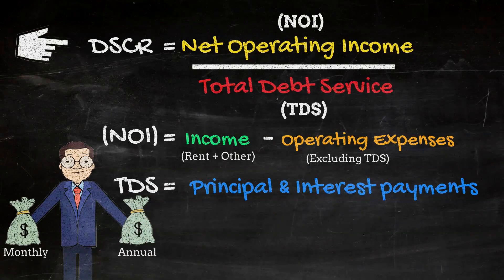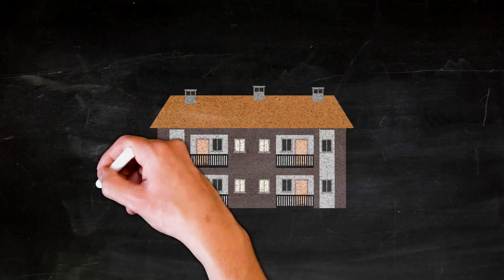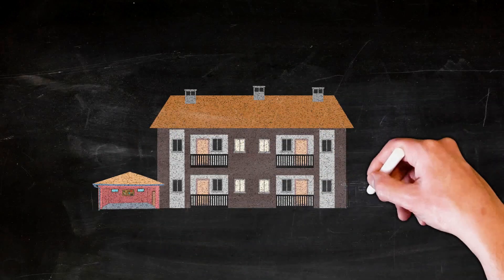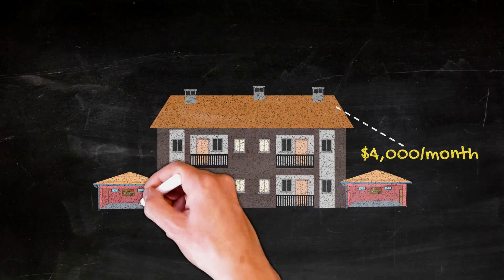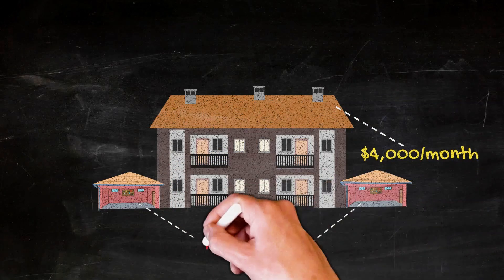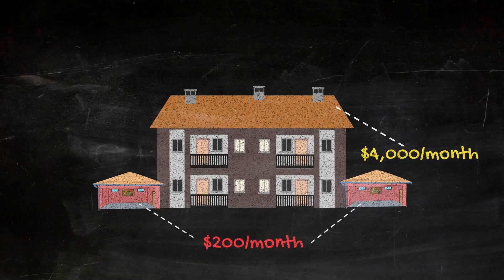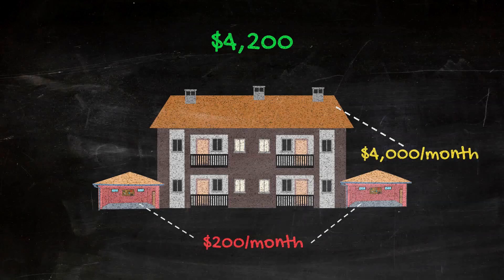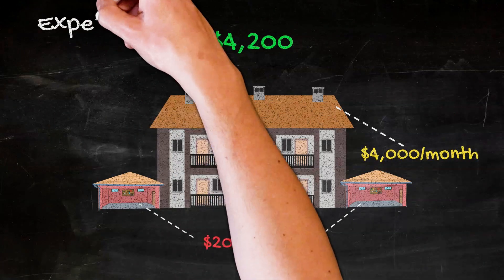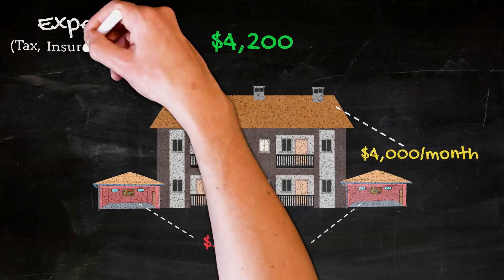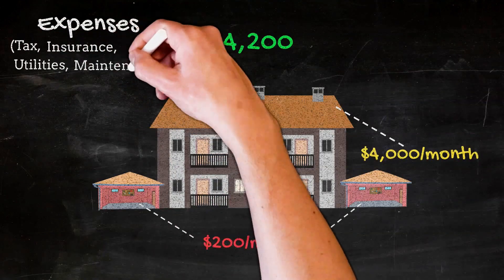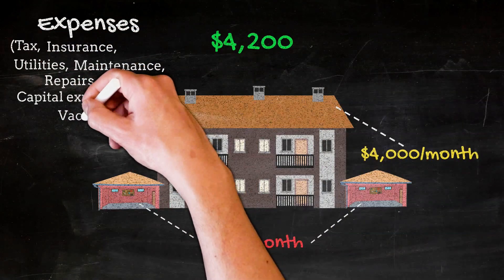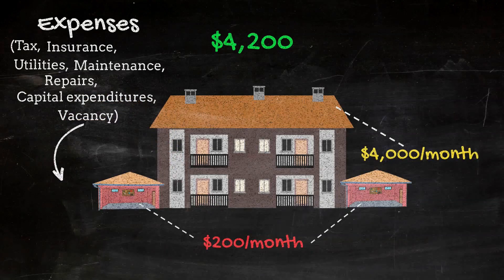Let's take a look at a quick example. Let's say that you're looking at a four-unit rental property with a two-car garage. The apartments combine to rent for $4,000 per month and the garage rents for another $200 per month, so the total gross monthly income is $4,200. Let's say that the property's owner-paid expenses — such as taxes, insurance, utilities, maintenance, repairs, capital expenditures —